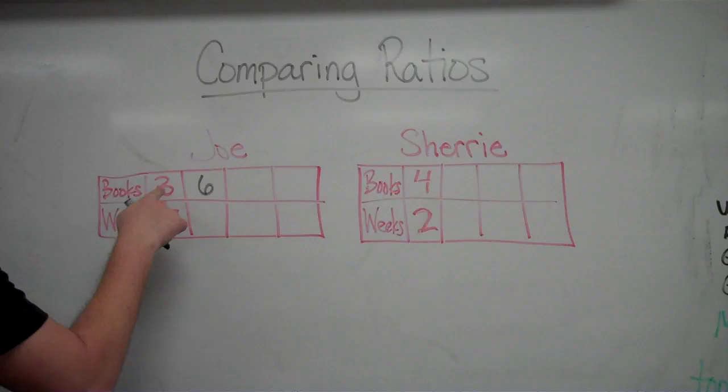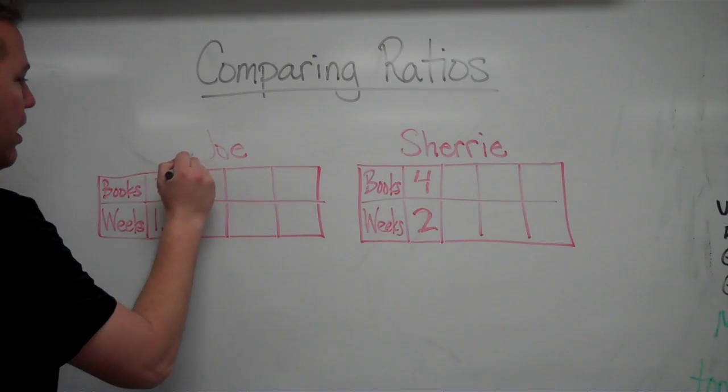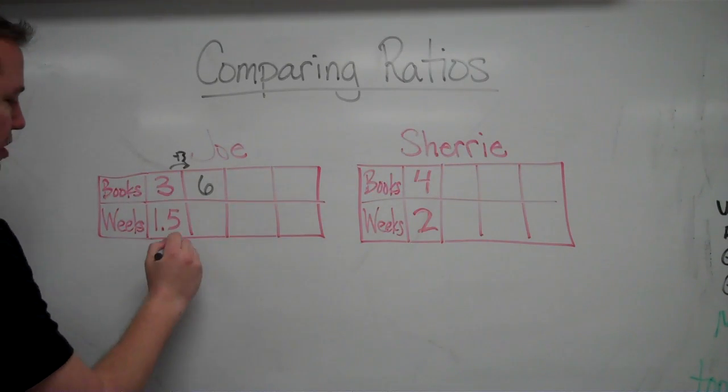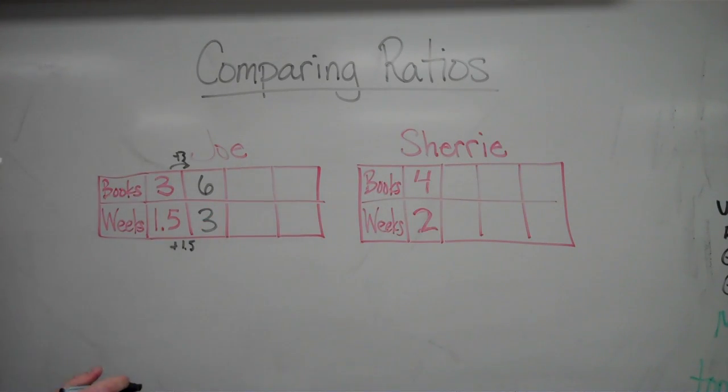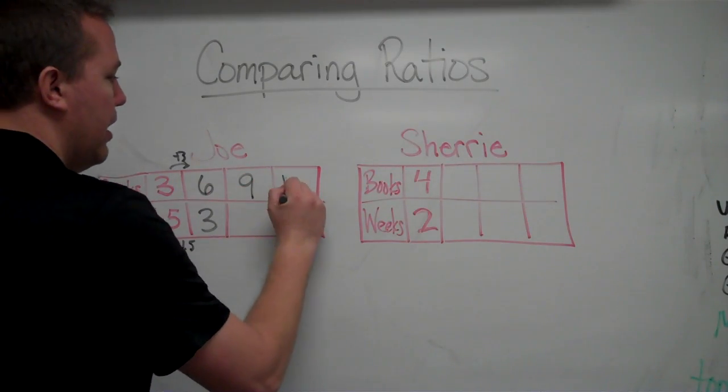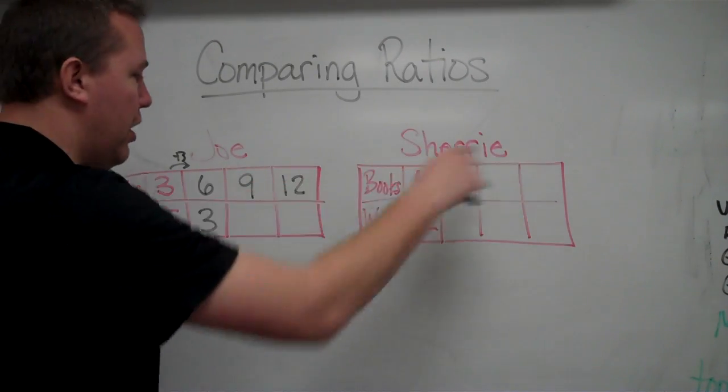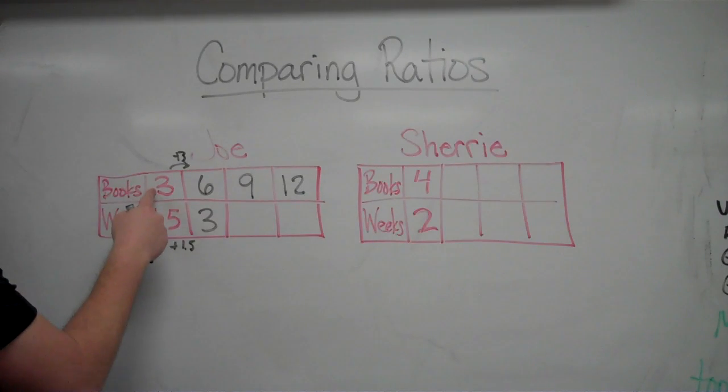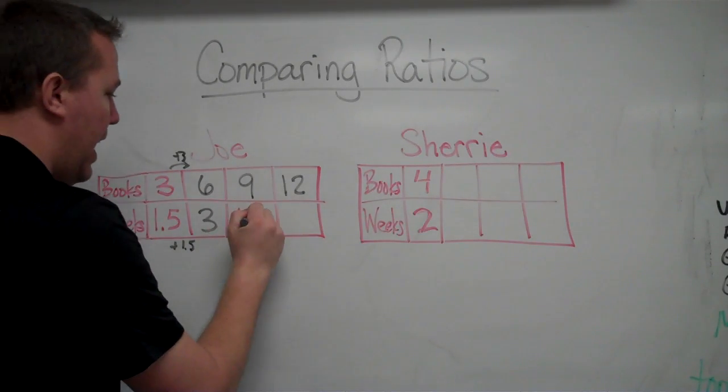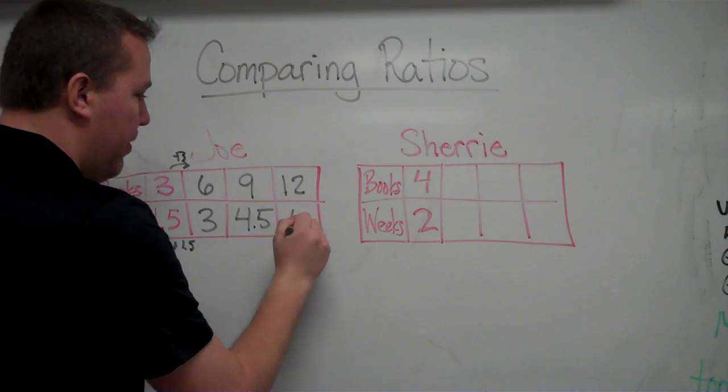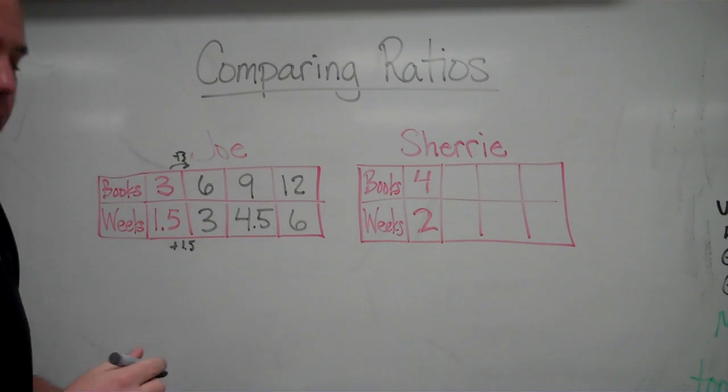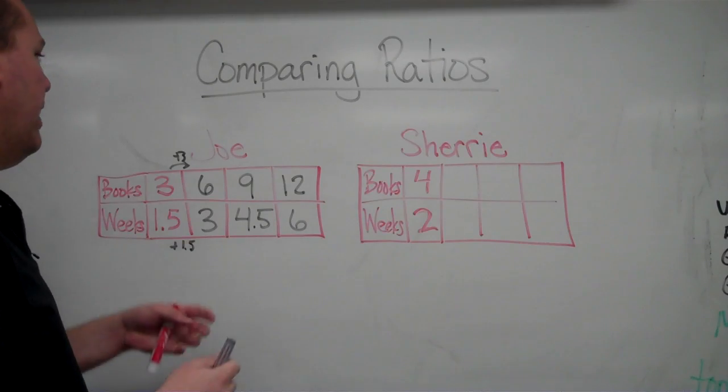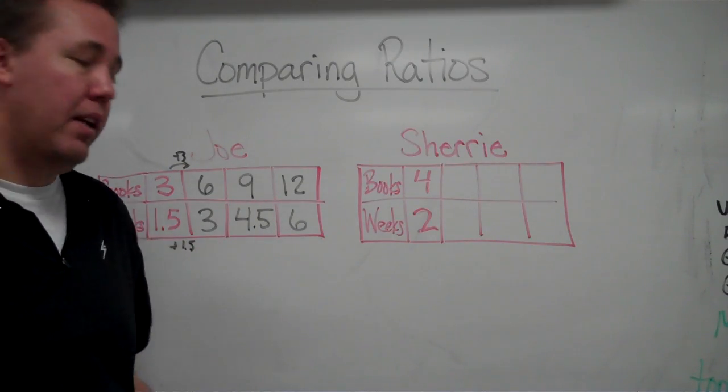Going to go the next step, three plus three to six, plus one and a half is three. So he reads six books every three weeks. Let's continue that, plus three, plus three. I could continue on plusing three on the top because that's the rate, then plus one and a half on the bottom. That's the table that we've completed for Joe.